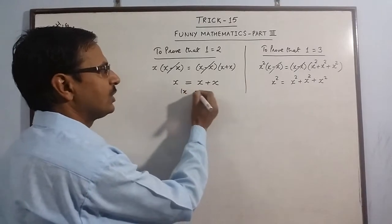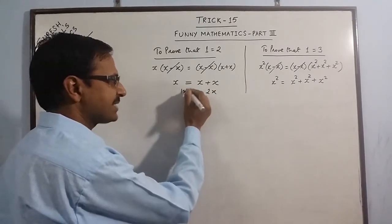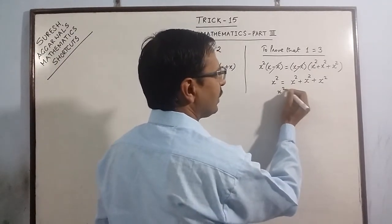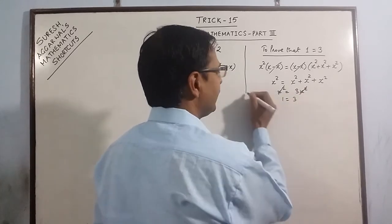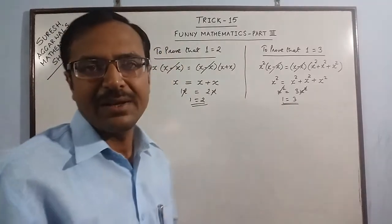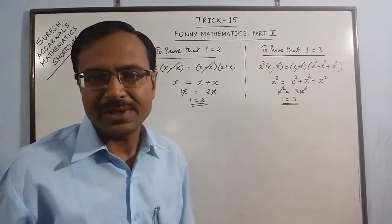Like here we got 1x equal to 2x, x equal to 1, x cancelled out and 1 equal to 2. And here we got x square equal to 3x square, cancelled out x square and 1 equal to 3.